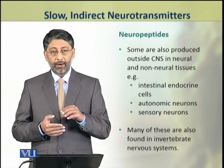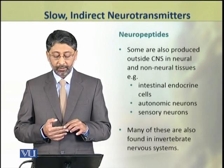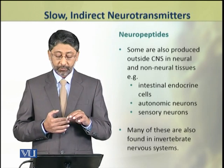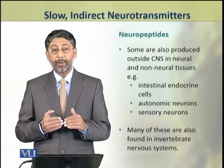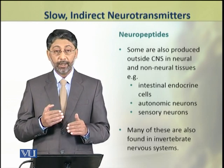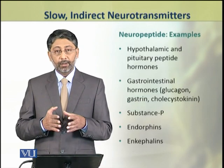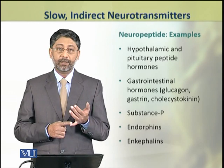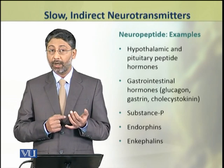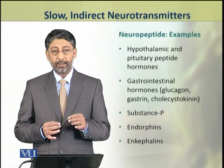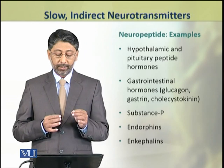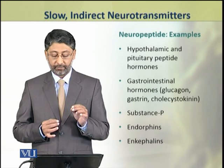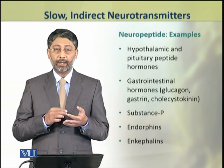For example, intestinal endocrine cells, some autonomic neurons, and some sensory neurons also produce neuropeptides. Some of these neuropeptides are also found in the nervous system of invertebrates. Examples of neuropeptides include many hypothalamic and pituitary gland hormones, as well as gastrointestinal hormones such as glucagon, insulin, gastrin, and cholecystokinin. Substance P, endorphins, and enkephalins are also examples of neuropeptides.